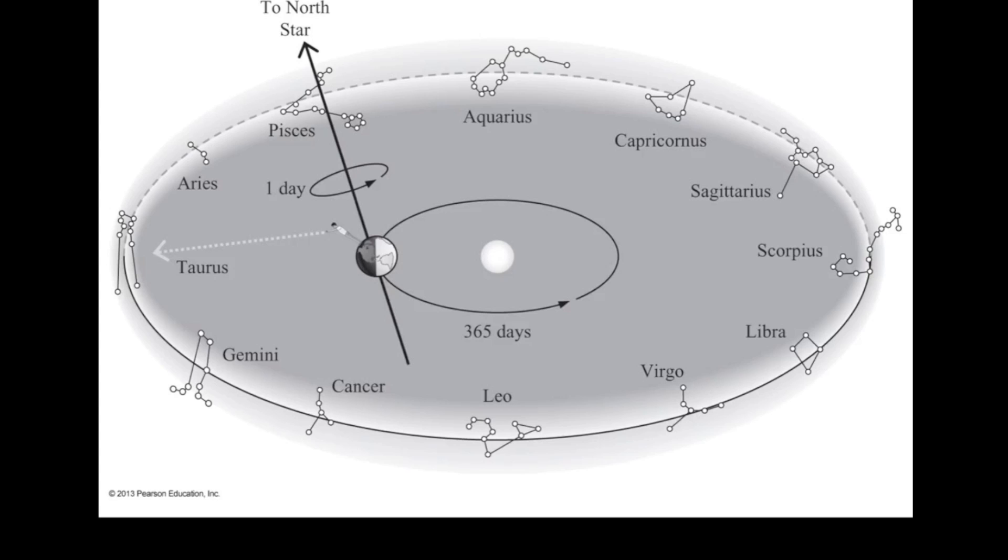Those are the stars that the Sun appears to move in front of over the course of an entire year. And so, what we've got shown right here is a person standing at a particular moment in that year when they can face out into space and see a particular constellation. So let's talk about this diagram a little bit.